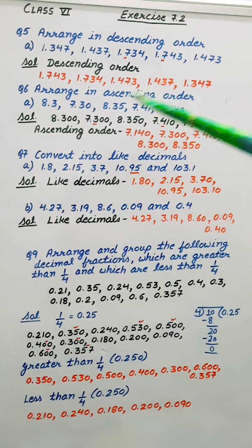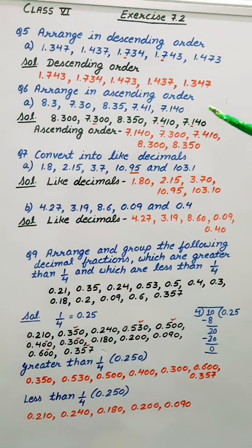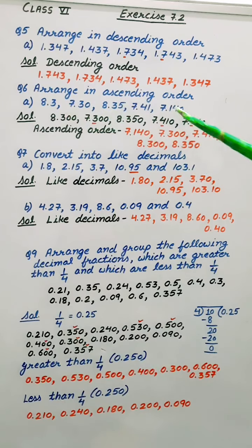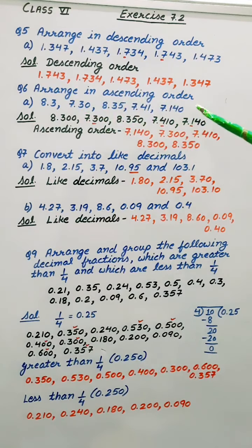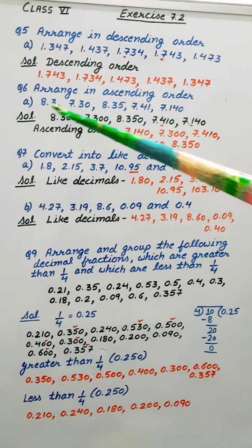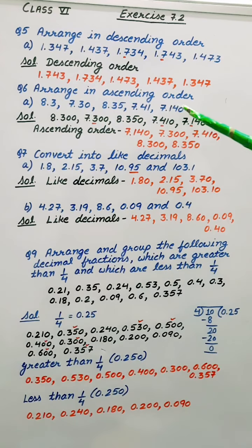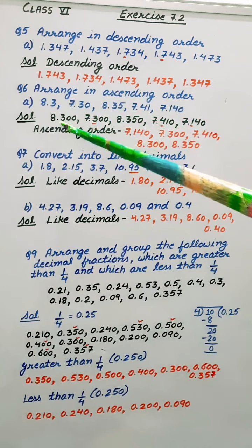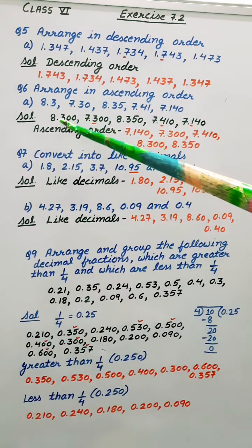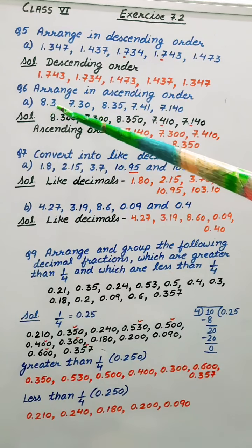Coming to 6th question: Arrange in ascending order. Here first of all we will make all these digits, all these numbers. We have to write them in like decimals. So here maximum number of digits after the decimal is 3. So everywhere we will make all these numbers. Here also decimal place because here 8.3 only.